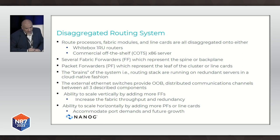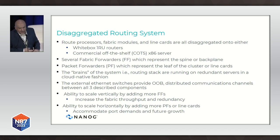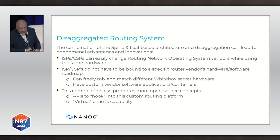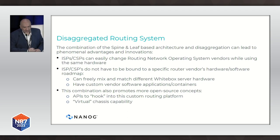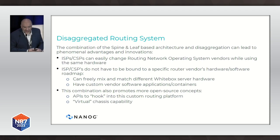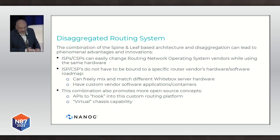Now you have the ability to scale vertically by adding more fabric forwarders if you need to increase fabric throughput or redundancy, and to accommodate future port demands, you can add more packet forwarders or line cards. This combination of the spine and leaf-based architecture and disaggregation can lead to phenomenal advantages and innovations. ISPs can easily change the routing network operating system vendors while using the same hardware — freely mixing and matching different white box hardware and having custom vendor software applications or containers. This also promotes more open source concepts, with APIs available to hook into this custom routing platform. Some vendors make all of these different components appear as one virtual chassis.